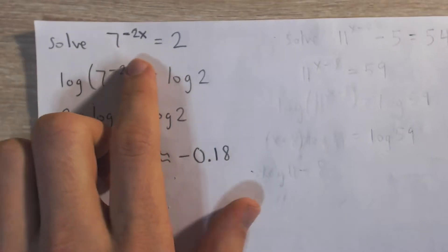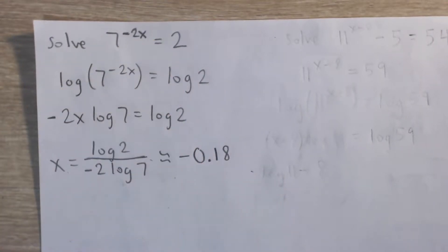Here we have to solve this exponential equation: 7 to the negative 2x power equals 2.